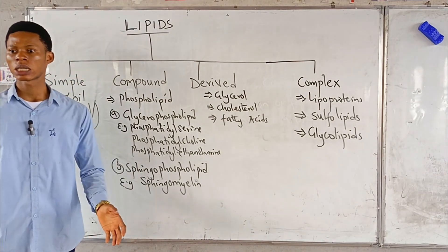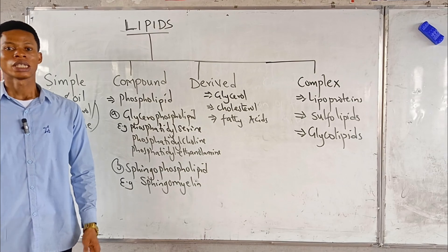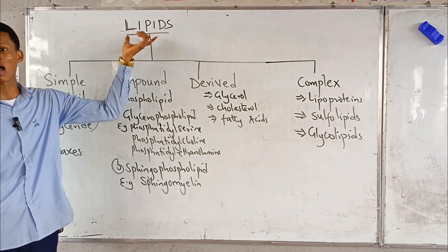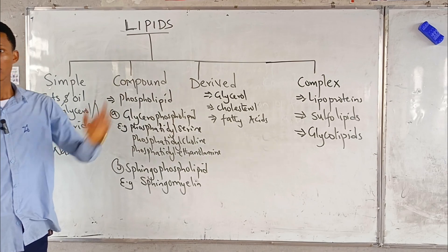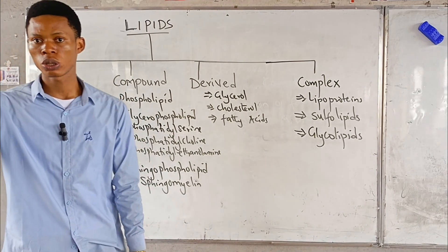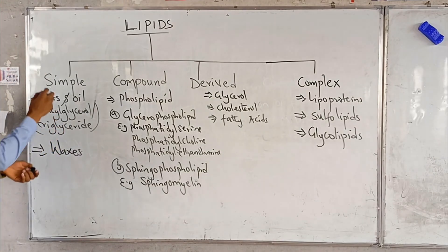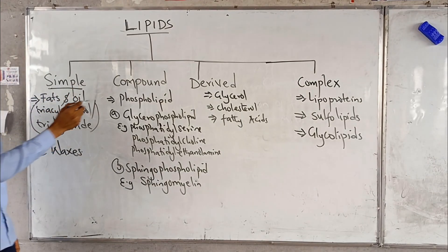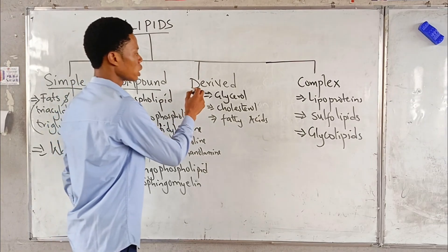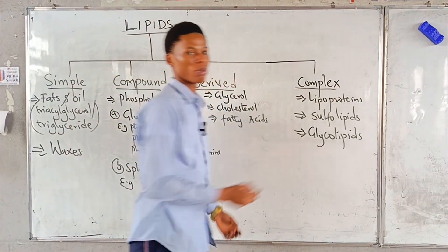We've seen the meaning of lipids and the functions of lipids. Now let's look at the classification of lipids. Lipids can be classified into four groups. The first one is simple lipids. The second one is compound lipid. The third one is derived lipids. And the fourth one is complex lipid.